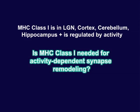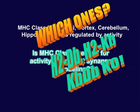Is MHC class 1 needed for activity-dependent synapse remodeling? My mom would have said, 'knock it out.' The question was which ones. We found that both K and D are present in the LGN — both mRNA and protein — during the time that activity-dependent synapse remodeling is going on. A colleague at Harvard, Hiddiple, had already made a mouse doubly mutant for both K and D. We contacted him, got the mice, and were very excited to study them.